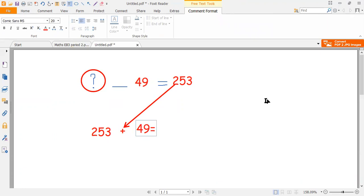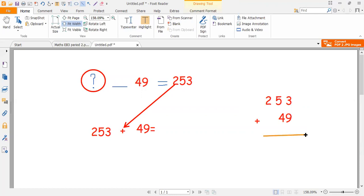Now, let's set up 253 plus 49. It's four tens. Nine is nine ones. And we start adding from the ones column. Three plus nine is 12.